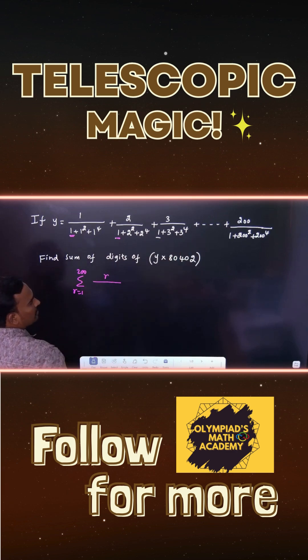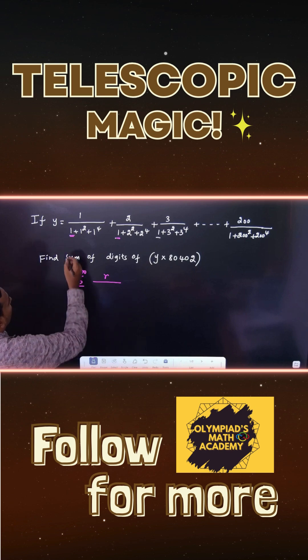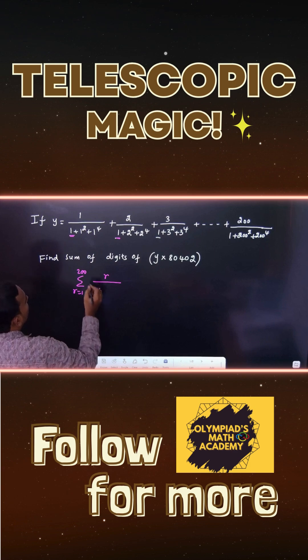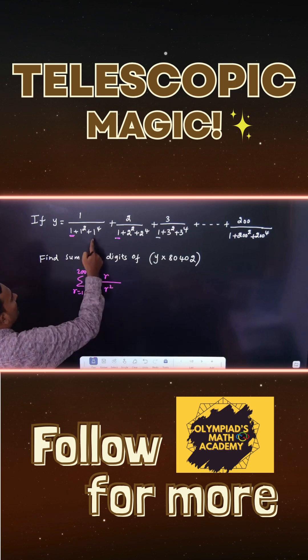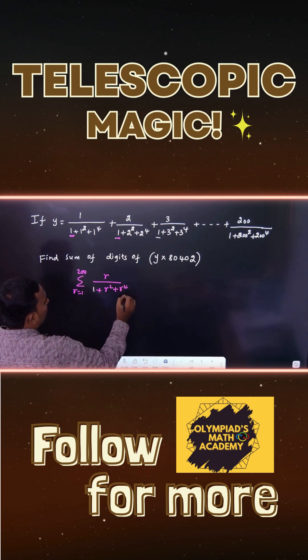You can take r in the numerator because it is varying. And in the denominator, you can see the first term is fixed. The second term is also varying: 1 squared, 2 squared, 3 squared. Let us take r squared. And the third term is 1 to the power 4, 2 to the power 4. It is varying, plus r to the power 4, we can write.